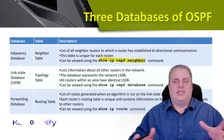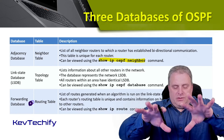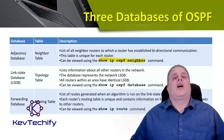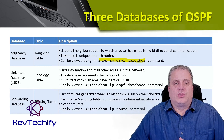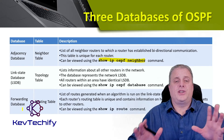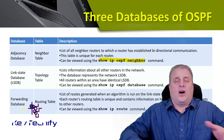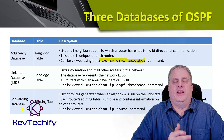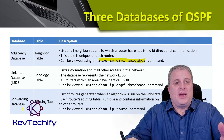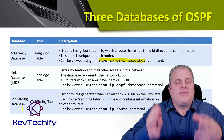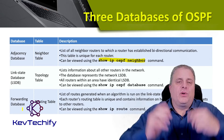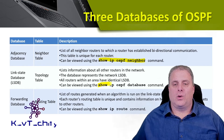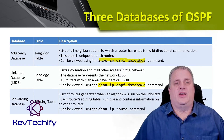The second database is the link state database, also known as the LSDB. This is the topology table — it records and tracks all the links and their states within our network, listing information about all the other routers. All the routers within an area have the same link state database because they know about every link. You can view this using the show IP OSPF database command.